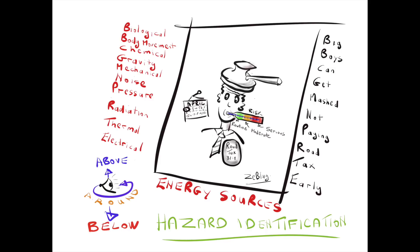Coming from my early days in the fire and rescue service, I find it useful to look at energy sources — look at fire above, around, and below. Another useful technique from advanced driving is the principle of far, near, here, and rear: far being the horizon, near is the middle distance, here is just in front of you, and rear is what's happening behind you. It's good to have this dynamic visibility and sensing skill set when looking at hazard identification.